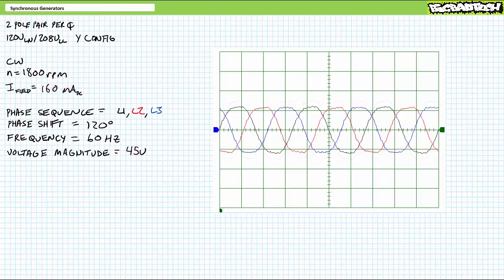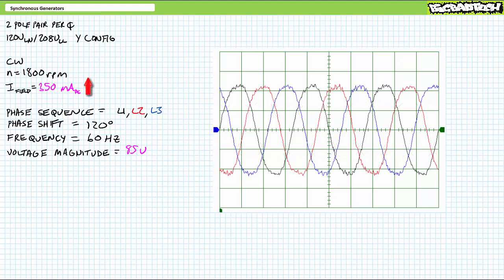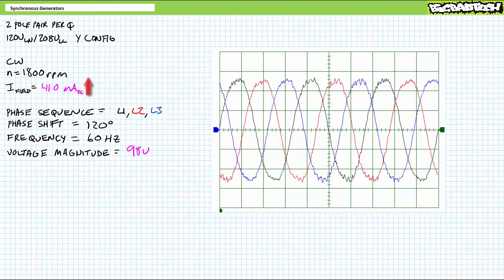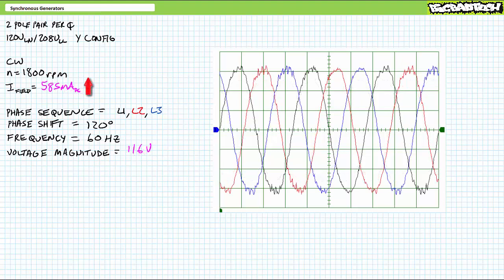At an increased 210 milliampere field current, voltage magnitude rises to 57 volts and frequency remains 60 hertz. When I step field current up to 350 milliampere, voltage magnitude rises to 85 volts and frequency remains 60 hertz. At 410 milliampere field current, voltage magnitude rises to 98 volts and frequency remains 60 hertz. When I step up field current to 585 milliampere, voltage magnitude rises to 116 volts and the frequency remains 60 hertz. So close. Just a little more field current.